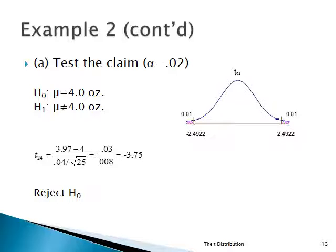Once we get the computed value, we compare it and see if we're in the region of rejection or in the middle where we don't reject. The computed value — using the formula T24 equals x-bar minus the hypothesized mean divided by the standard error of the mean — ends up at negative 3.75. So it's well into the region of rejection at this alpha level. The conclusion is: reject the null hypothesis.